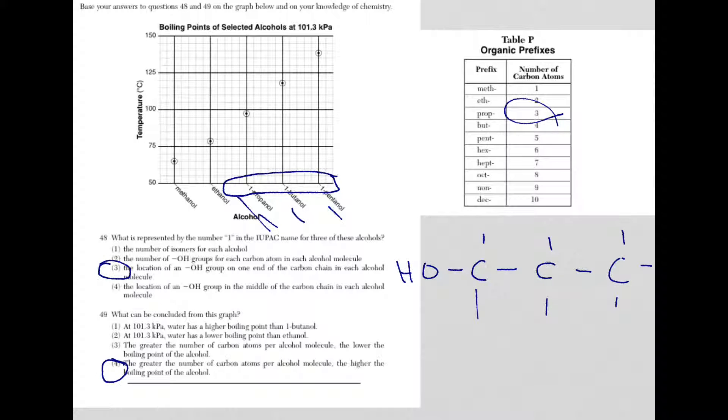Let's take a look at 49. What can be concluded from the graph? So what do I have? I have alcohols, and I'm looking at the boiling points at standard pressure, and notice what's happening. Meth is 1 carbon, eth 2, prop 3, bute 4, and pent is 5. As the number of carbon atoms is increasing, so is the boiling point. Let's see if that is any of the choices. And lo and behold, when you go ahead and you go through them, you find that it's choice 4.